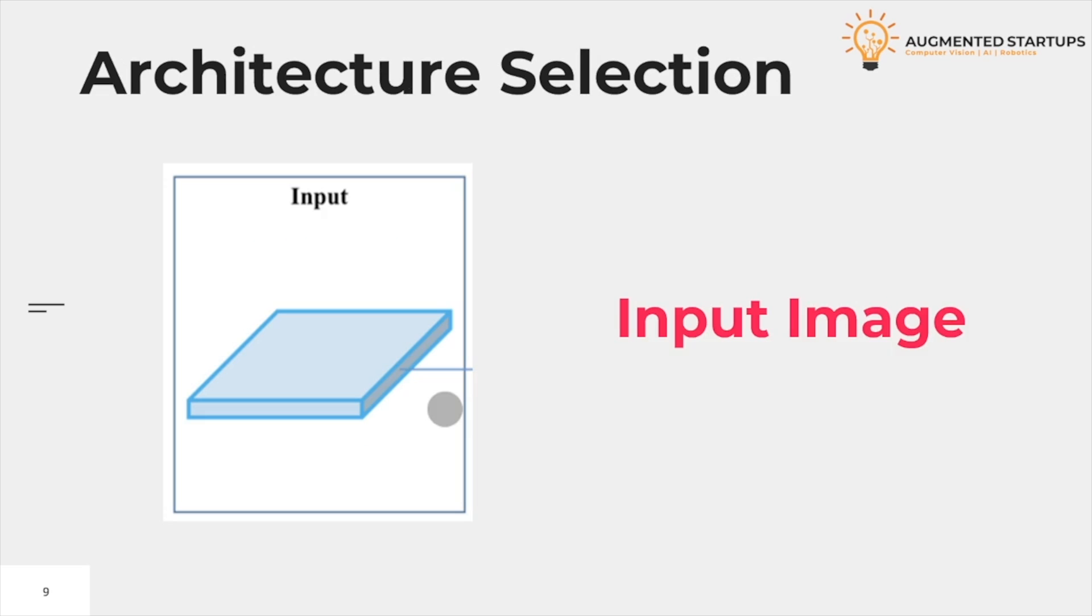First, the input. The input layer is nothing but the image input you provide. It can be a two-dimensional array with three channels: red, blue, and green. It can also be a video input at each frame of some image input.